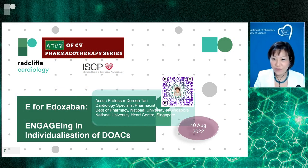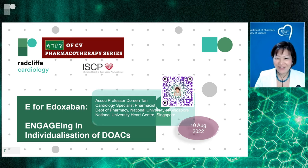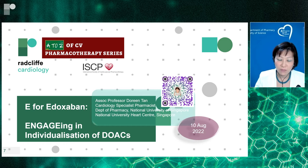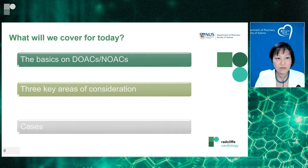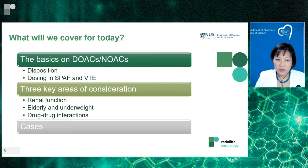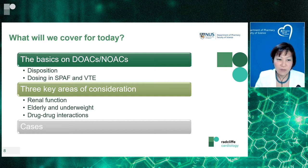Good evening. Thank you for having me. This evening we're going to talk about edoxaban, but it's important to also explore the overarching information about all the DOACs. We will cover the basics of DOACs or NOACs, disposition of the DOACs, dosing in SPAF — stroke prevention in AF — and VTE, as well as three key areas of consideration: renal function, elderly, underweight, and drug interactions. For the purpose of today's presentation, I'll be focusing on the role of edoxaban in AF rather than VTE.